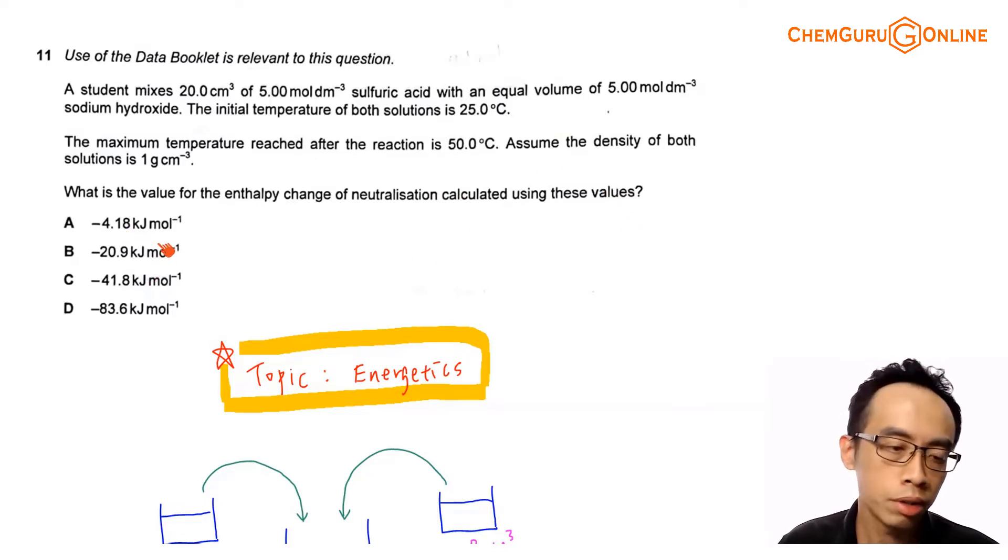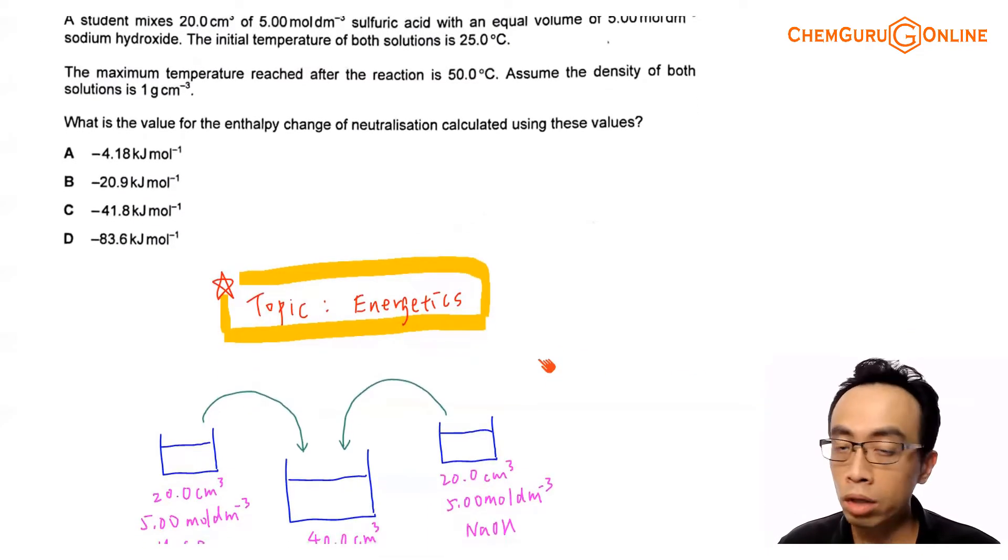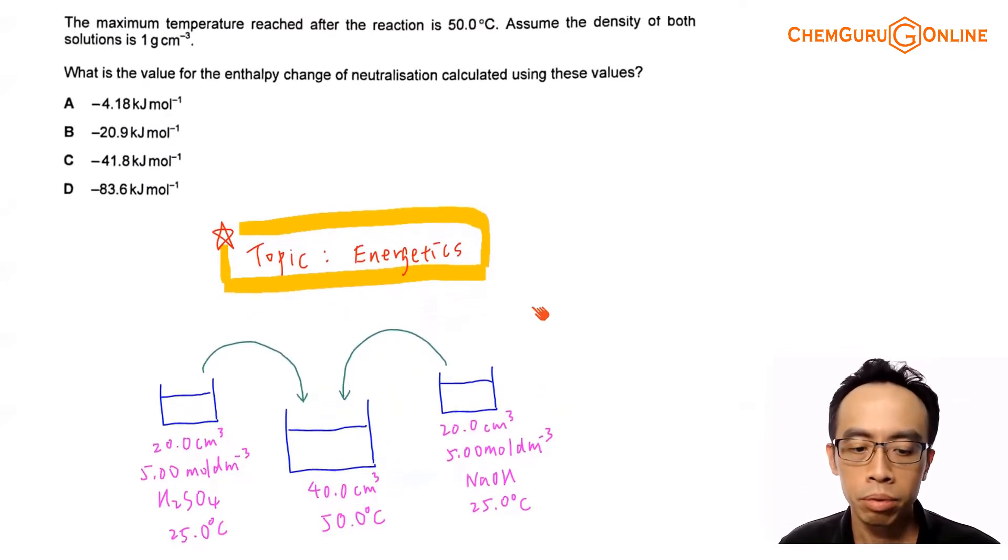So what is the value for the enthalpy change of neutralization calculated using these values? Now we have four options, A, B, C, D. Later we will run through the options after the calculation. The topic tested in this question obviously is under energetics, in particular calorimetry question, and the process is here.